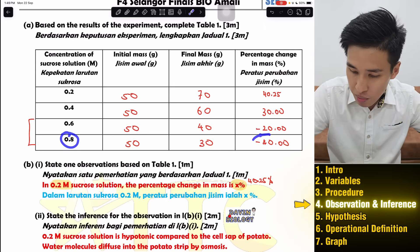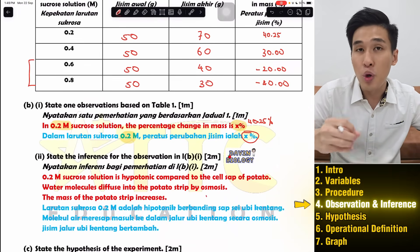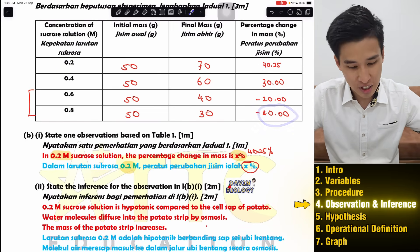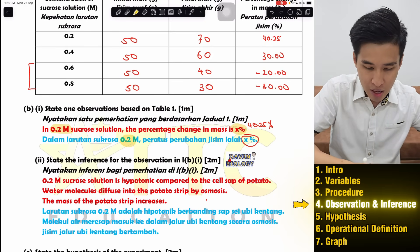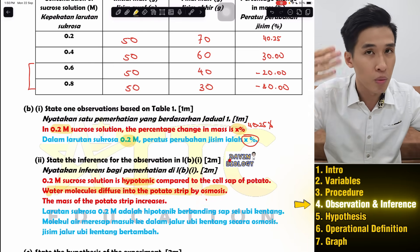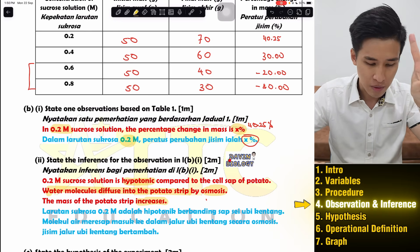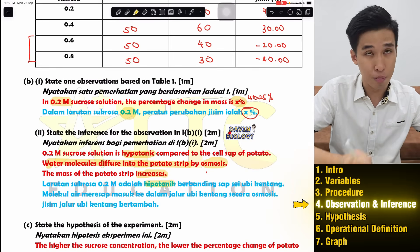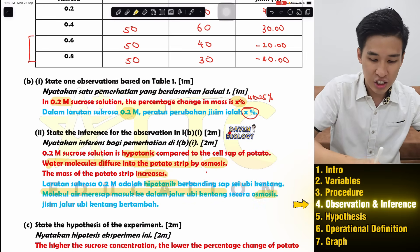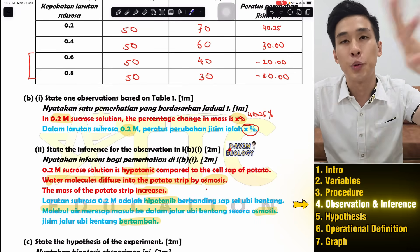For inference, now you include your biological knowledge and explain why. For example: 0.2 M sucrose solution is hypotonic compared to the cell sap of the potato strip, so water molecules diffuse into the potato strip by osmosis — don't forget to write 'osmosis' — therefore the mass increases. In BM: larutan 0.2 M adalah hipotonik berbanding dengan sap sel ubi kentang; molekul air meresap ke dalam ubi kentang secara osmosis; jisim bertambah. For 0.8 M it is the opposite: hypertonic, water diffuses out, mass decreases.